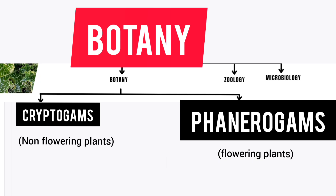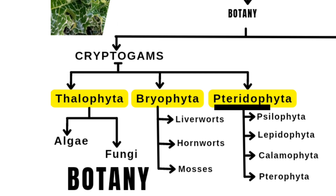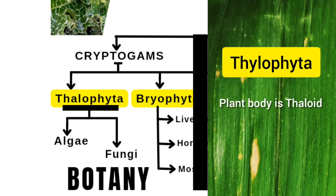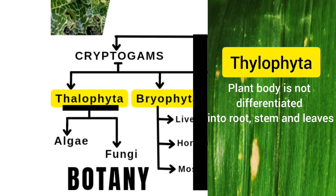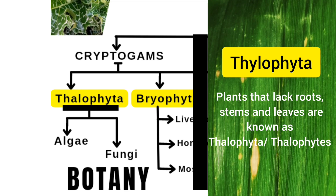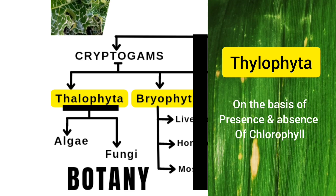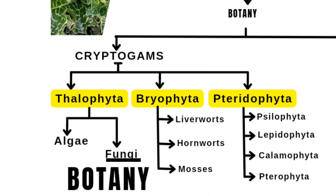So cryptogams means non-flowering plants and phanerogams means flowering plants. Cryptogams are further divided into Thallophyta, Bryophyta, and Pteridophyta. In Thallophyta, the plant body is thalloid — that is, the plant body is not differentiated into roots, stems, and leaves. These plants look like filaments. Thallophyta is further divided into two parts on the basis of presence or absence of chlorophyll: algae and fungi.